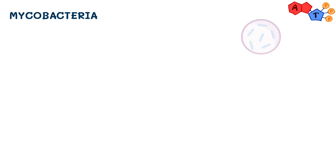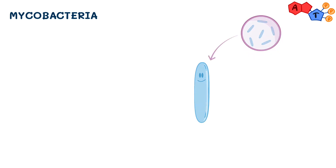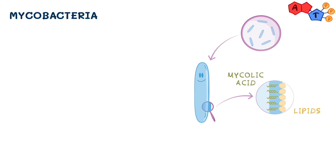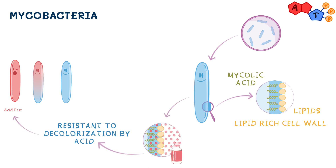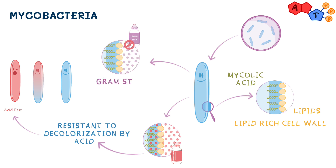Before we start, I would like to briefly talk about mycobacteria itself. It's called mycobacteria because it contains a unique substance in its cell wall called mycolic acid. Mycolic acid contains lipids, making the cell wall of the bacteria a lipid-rich cell wall. Mycobacteria are also called acid-fast because they are resistant to decolorization by acid after staining with carbofuchsin. Therefore, they Gram stain poorly.